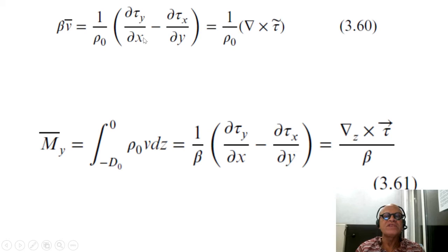So you end up with the curl of the wind stress divided by rho_0 giving you beta times v_bar, which is the integrated meridional transport, vertically integrated meridional transport. So writing that as M_bar_y, we can integrate the rho_0 v dz, which is this term here. So that's what we wrote as curl of tau. When we say z here, it's curl in the xy plane, which is vertical to the xy plane.